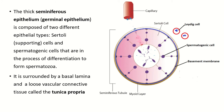Now we discuss the single seminiferous tubule. This is the basement membrane. On the basement membrane, Sertoli cells rest. This is the nucleus of the Sertoli cell — light stained nuclei with prominent nucleolus, and the shape of the nucleus is oval or triangular. The Sertoli cell holds the spermatogenic cell, which is the most numerous cell of the seminiferous tubule.